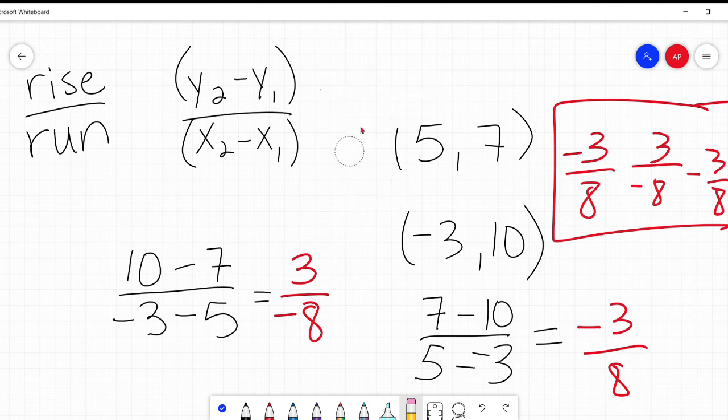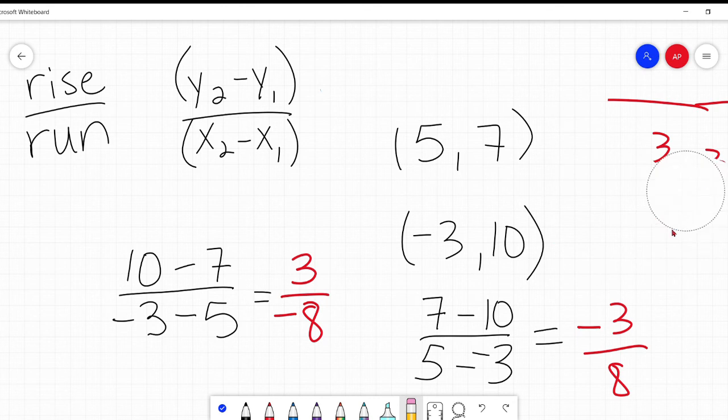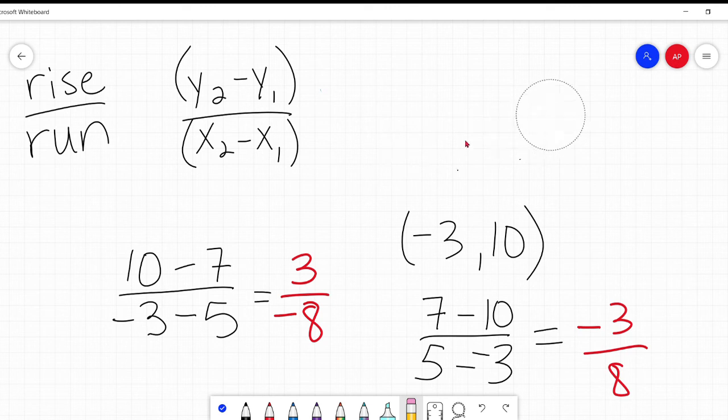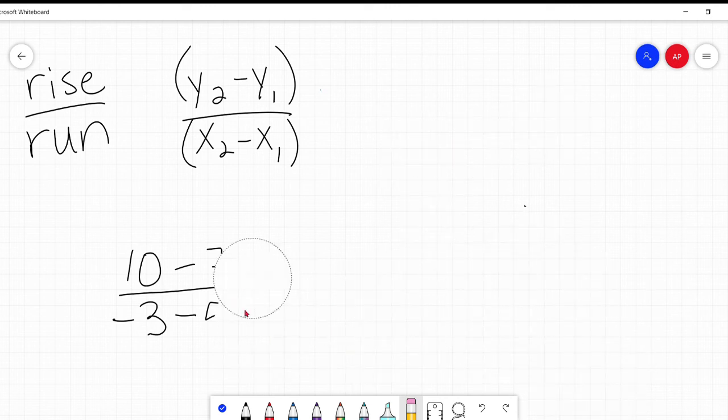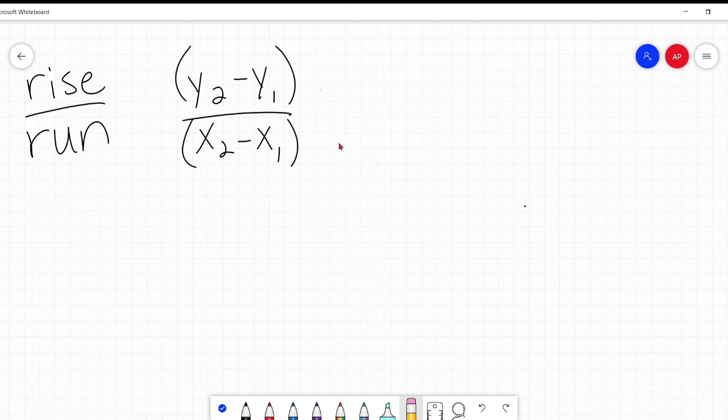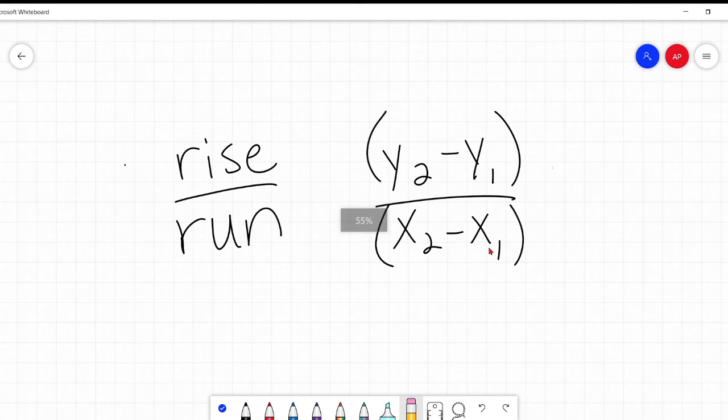So, again, all we're doing is the same thing. We're finding that rise over run. Which is, how much is the Y changing over how much is the X changing? This works for any points that you want to plug in. And again, unless you have a teacher or a professor that's specifically telling you this is point one, this is point two, and wants you to plug those in just like this. If you're just doing it on your own to find the slope, it doesn't matter. You will get the same answer. So, that is using change in Y over change in X to find the slope of a line.